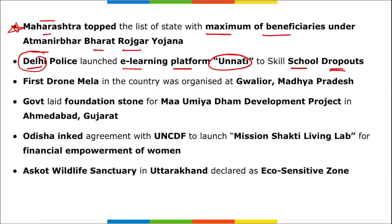The SMILE scheme was also launched — its aim is to help transgenders who were engaged in begging by providing them with education, shelter, food, healthcare, and other benefits. A direct question can be asked: SMILE scheme was related to whom? It was related to transgenders.